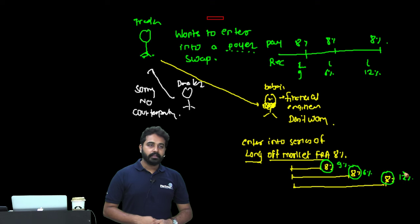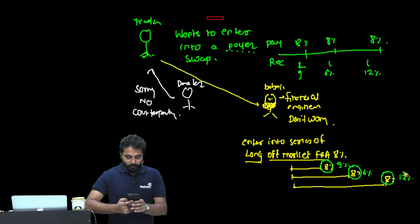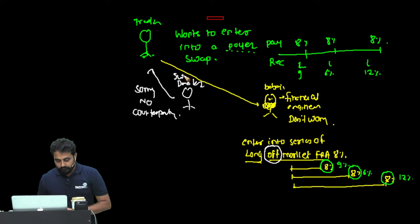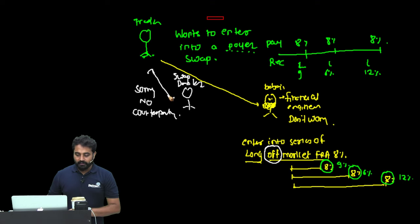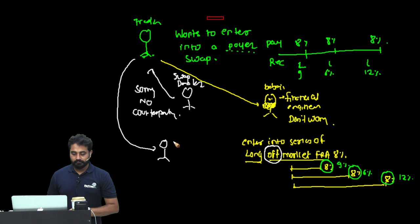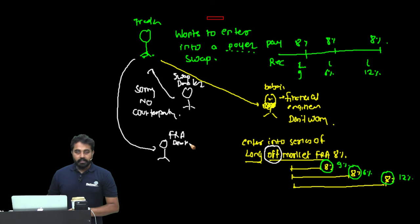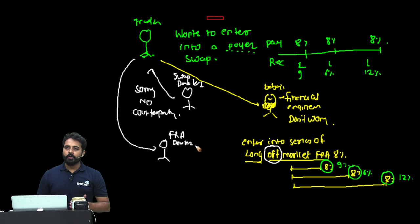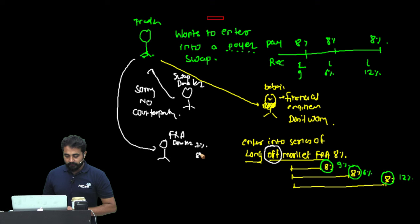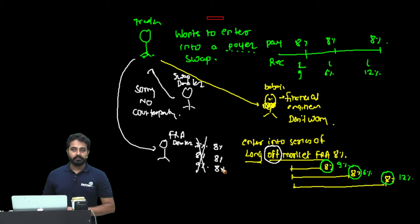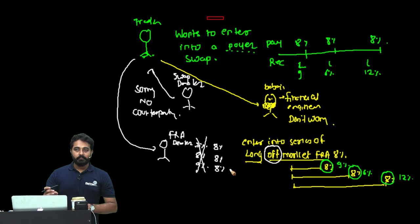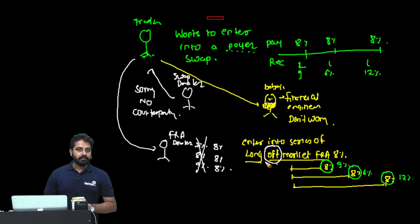Back to the story: you wanted a swap — not available. You went to Babaji, he said enter FRAs. You went to the FRA dealer — no counterparty. You went back to Babaji, and he said: buy a floater and sell a fixed coupon bond. Buy a floating coupon bond, sell a fixed coupon bond with a maturity of 3 years. You purchased the floater — every year you receive LIBOR. You are selling a fixed coupon bond — as the issuer, every year you must pay that 8% fixed coupon. The face values of 1000 received and paid at maturity cancel each other out, so the net effect is identical to a swap.